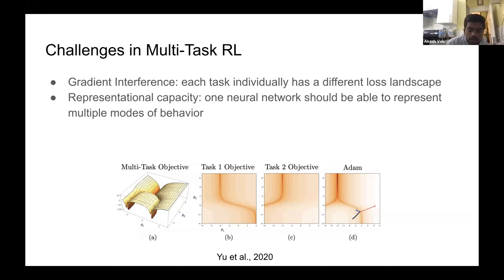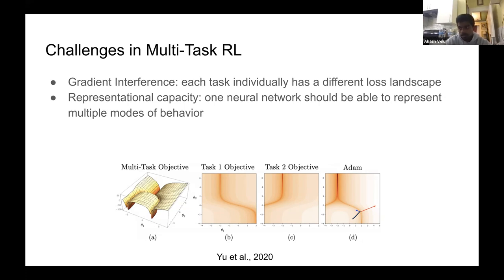It should be able to do these tasks distinctly, but also, because there's a limit on capacity, it should find overlap between different tasks. For instance, if there's a similarity in certain parts of movement for pushing a block versus pressing a button, it should recognize this and take advantage of it.